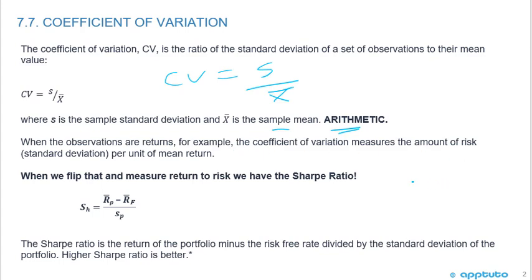When the observations are returns, the coefficient of variation measures the amount of risk per unit of mean return. So it's a risk-to-return measure. Standard deviation represents risk — that's variability in returns — and X bar is the mean, or average, return.